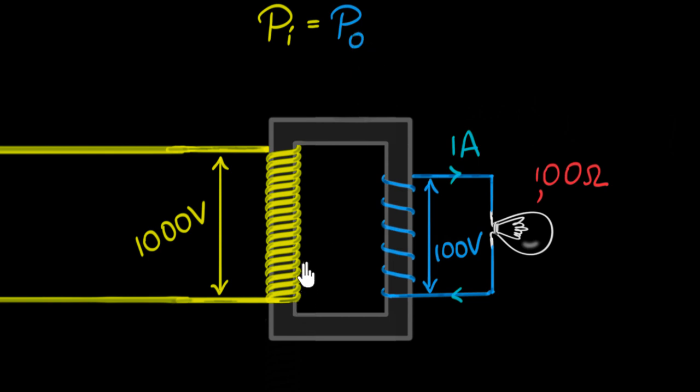And how do we calculate electric power? We calculate that as the product of voltage and current. So the input power would be the input voltage, I'm just gonna write V_i, that's our thousand, multiplied by the input current which I need to calculate. And that equals the output power, V_out which is our hundred, multiplied by the output current.